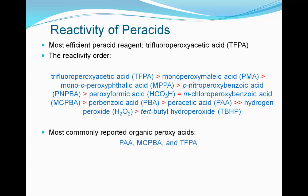Among this group, ease of handling, oxidizing power, and commercial availability render PAA, MCPBA, and TFPA the most commonly reported organic peroxy acid reagents used in Baeyer-Villiger oxidation. Other oxidizing agents must either be prepared or they are less commonly reported for other reasons for using Baeyer-Villiger oxidations.